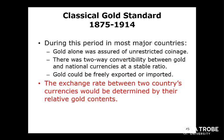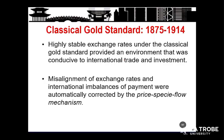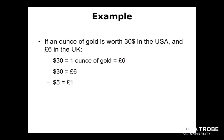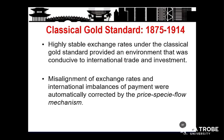With the classical gold standard, the value of your currency is basically a function of the gold reserve you have in your central bank. Countries fixed their currency value against gold using a certain fixed ratio — for example, one ounce of gold equals 30 US dollars. Exchange rates were very stable because you could easily work out the value of your currency based on how much gold you have. Any misalignment of exchange rates could be corrected by the price-specie flow mechanism.